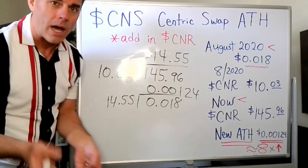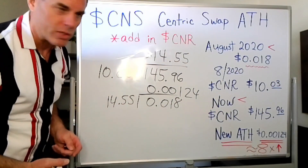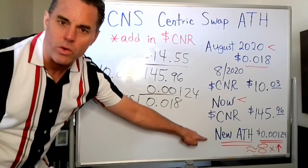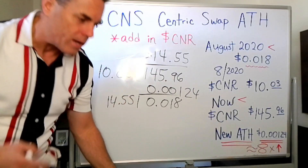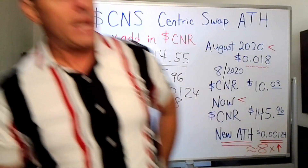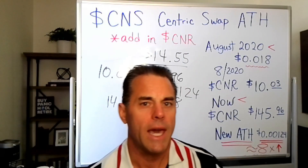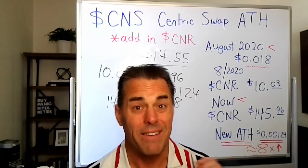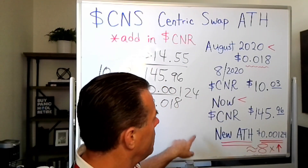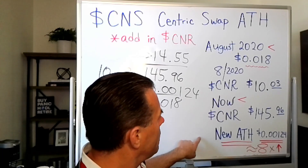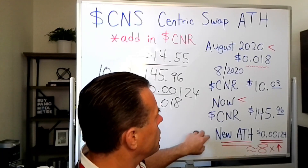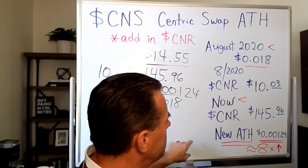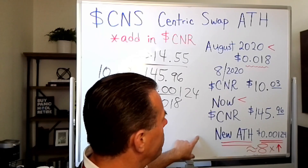It's actually 0.0012377 — I just rounded up a little bit. But what this is going to do is create a new all-time high, and if we divide these two numbers we would end up with that new all-time high figure.